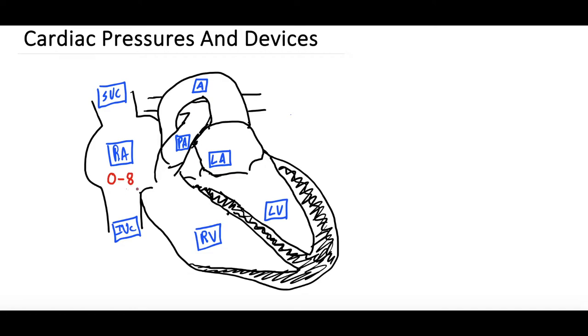Traveling down through the tricuspid valve here into the right ventricle, we start to get higher pressures and we start to get a systolic and diastolic. In the right ventricle we expect 15 to 30 millimeters of mercury over zero to eight. Now you might notice that the zero to eight diastolic is the same as the right atrium. That's going to be a common pattern that we start to see going forward in terms of diastolic and systolic pressures.